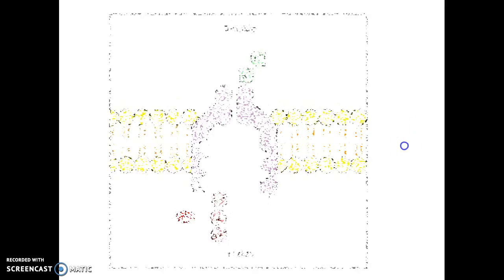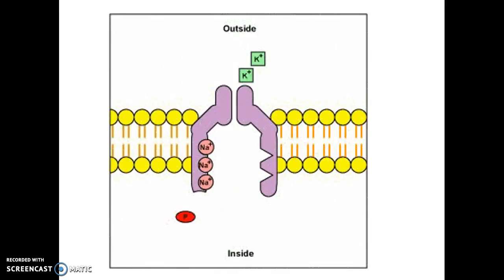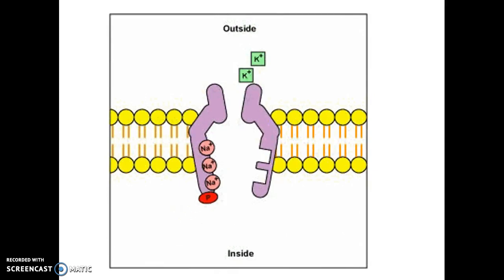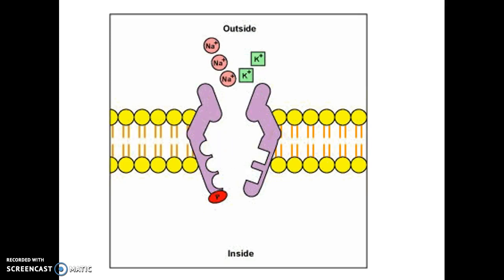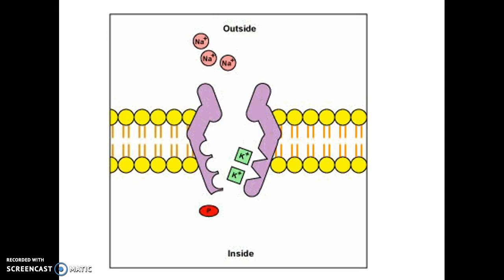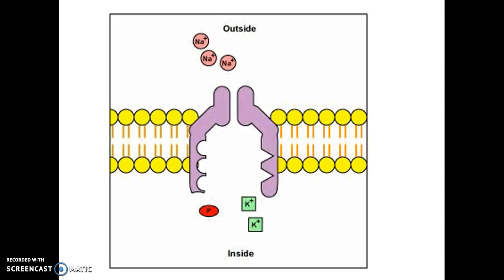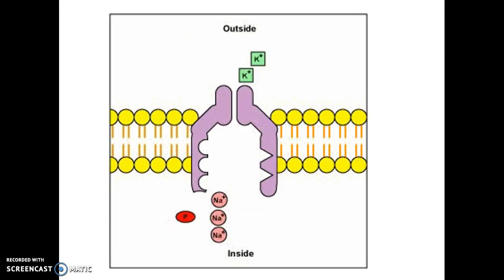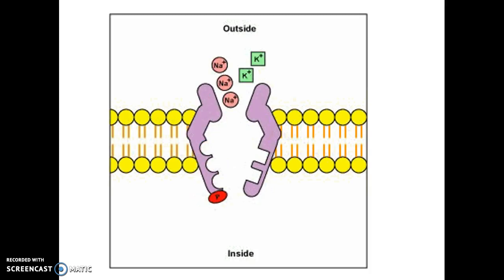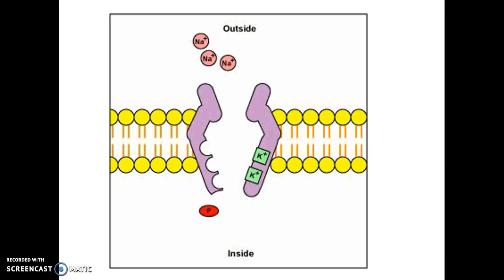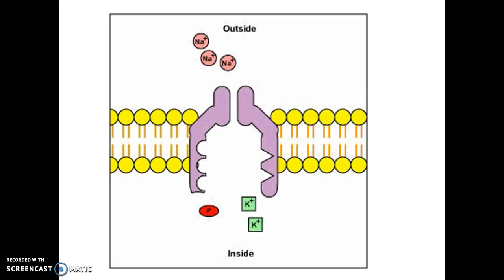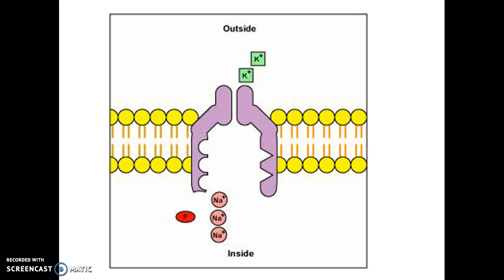This animation shows what's happening: three sodiums come in, a phosphate breaks off of ATP, which causes the protein to flip its shape and release the sodiums outside. Two potassiums then come in because this new shape is attractive to potassium. The binding of potassiums causes the phosphate to break off, and it goes back to its original shape. Overall: three sodiums carried out, two potassiums in, one phosphate used.